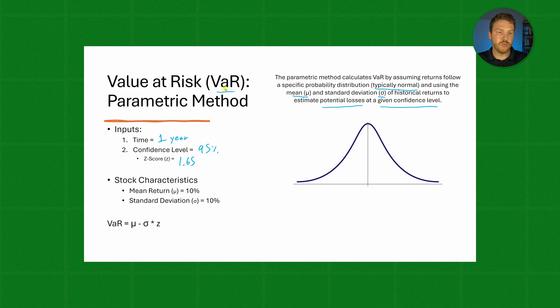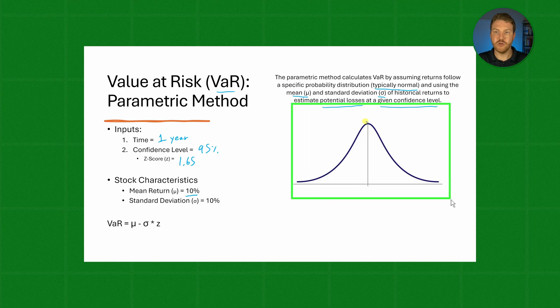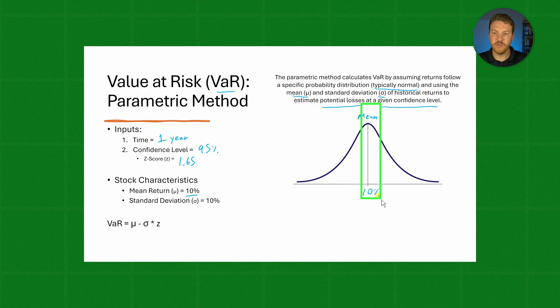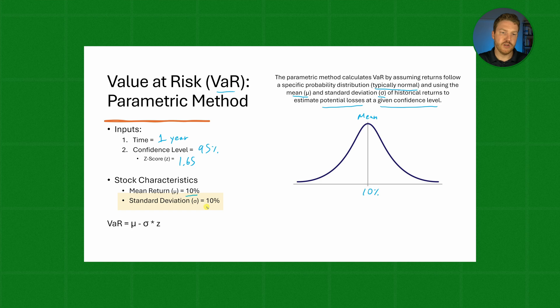Let's assume we're looking at a stock with these characteristics. This stock has a mean expected return of 10%. If we go over to our bell curve distribution, the mean at which we expect the stock to perform is a 10% return for one year. For standard deviation, we'll assume that's also 10%.